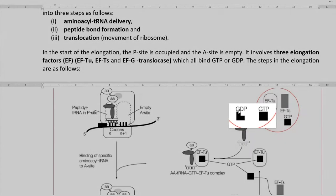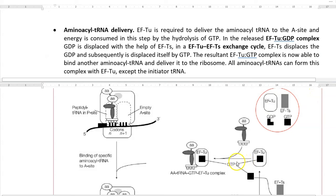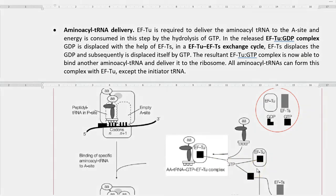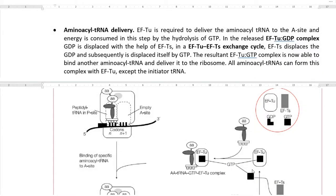The first step is aminoacyl tRNA delivery. EF-TU is required to deliver the aminoacyl tRNA to the A site of the ribosome, and energy is consumed in the form of hydrolysis of the GTP that has been attached to the elongation factor TU.